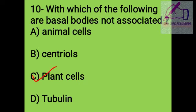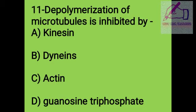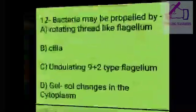Question 11: Polymerization of microtubules is inhibited by: A. Echinomycin, B. Dynein, C. Actin, D. Guanosine triphosphate. The answer is D, guanosine triphosphate.